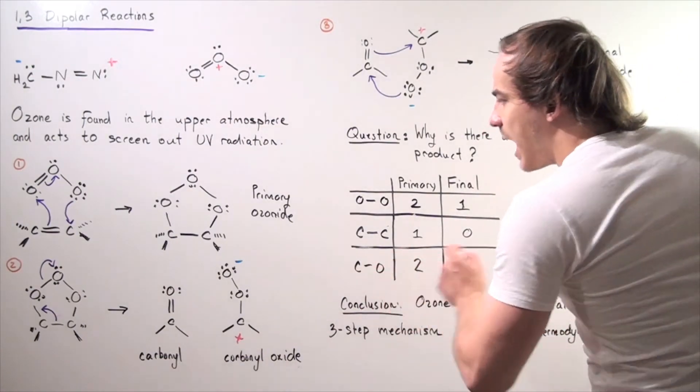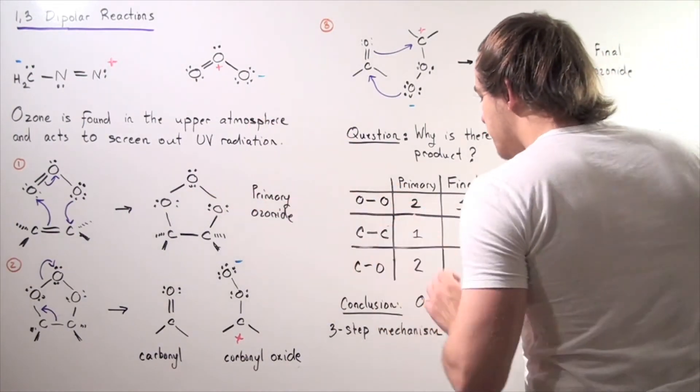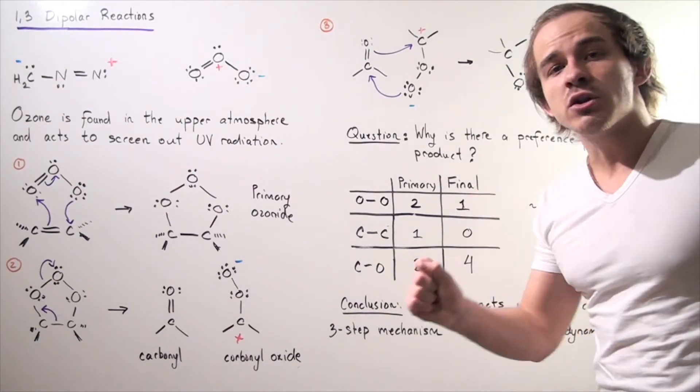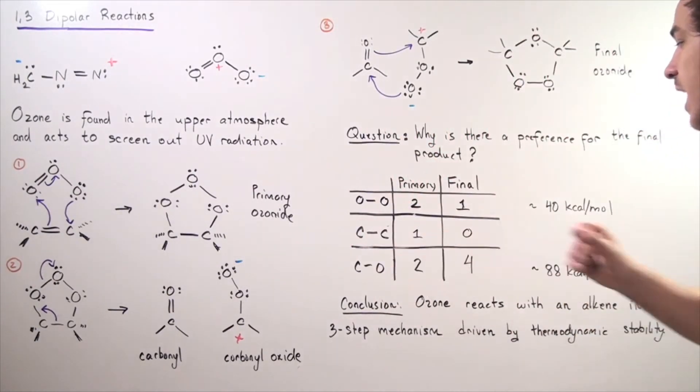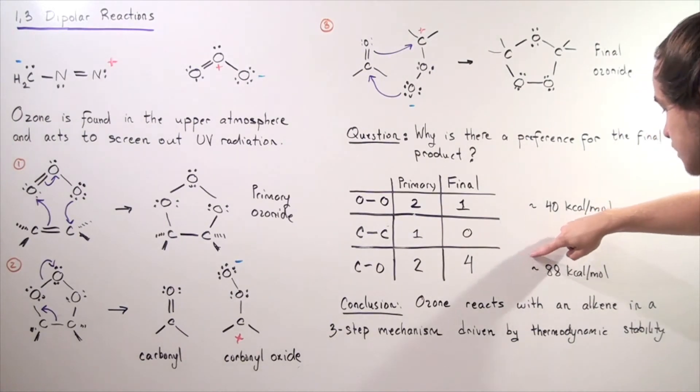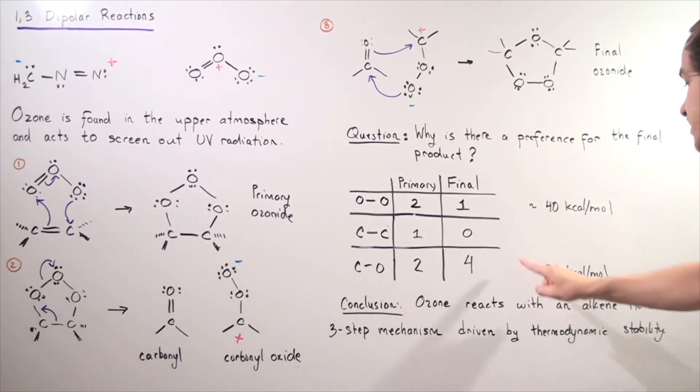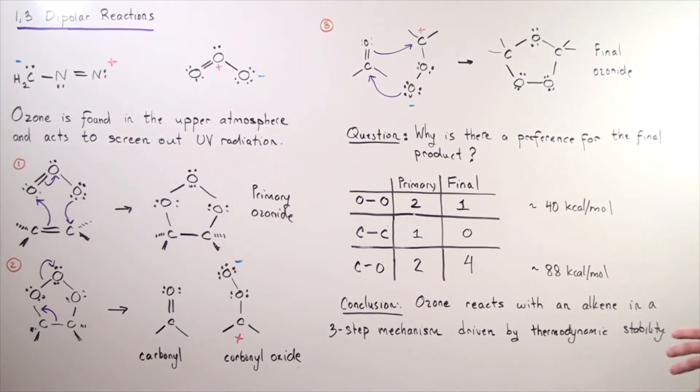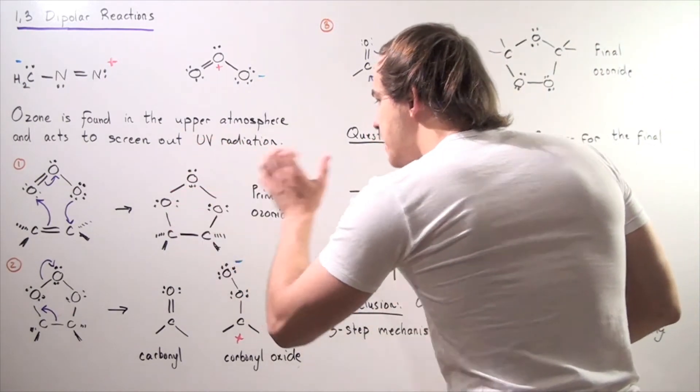And finally, we have the carbon-oxygen. So in the primary, we have two carbon-oxygens, while in the final, we have a total of four carbon-oxygens. And because these bonds are more stable, and we have more of these bonds in the final product, that means the final product is much more stable than this primary product.